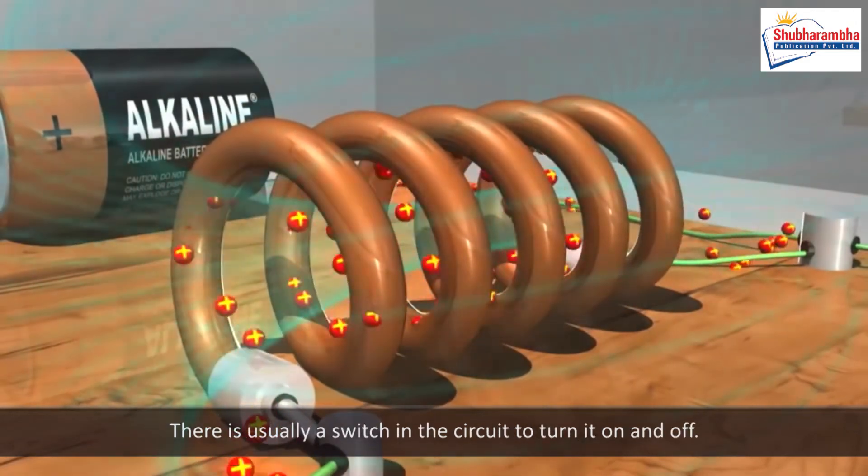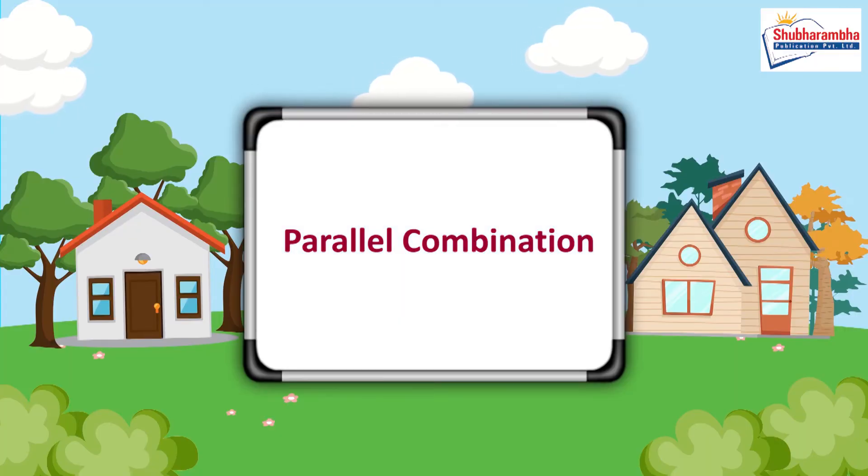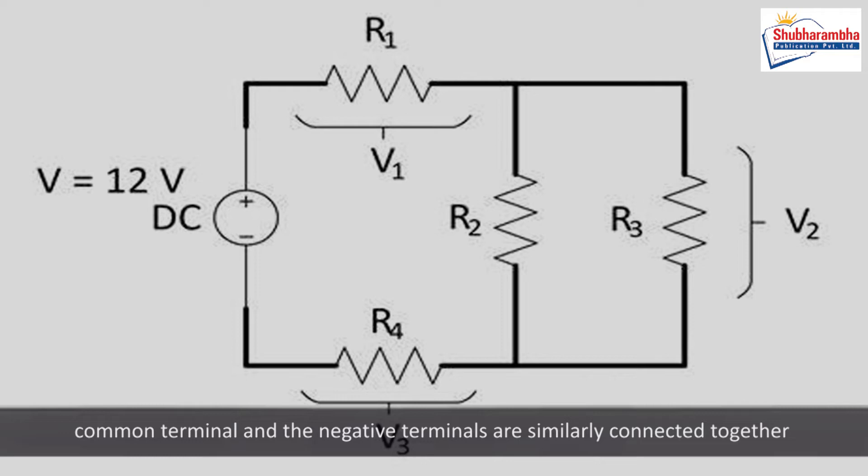Parallel combination: When the positive terminals of all cells are connected together to form one common terminal and the negative terminals are similarly connected together to form another common terminal, then the cells are said to be connected in parallel.